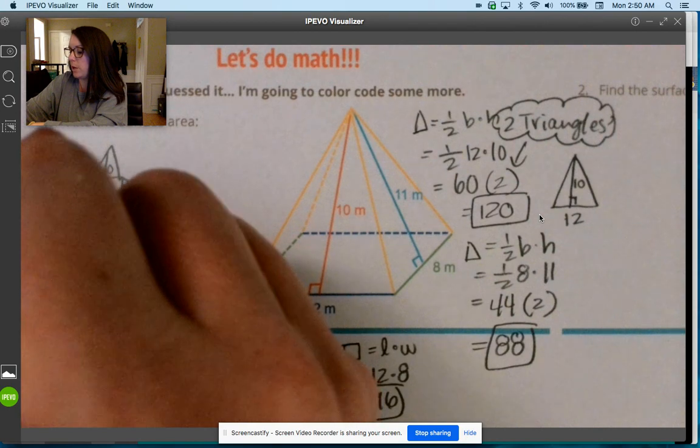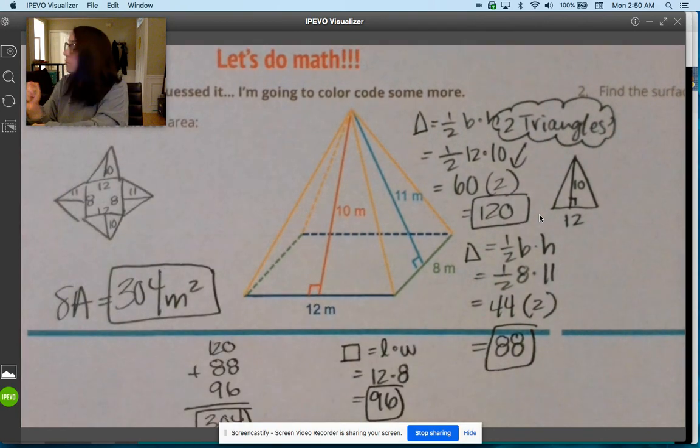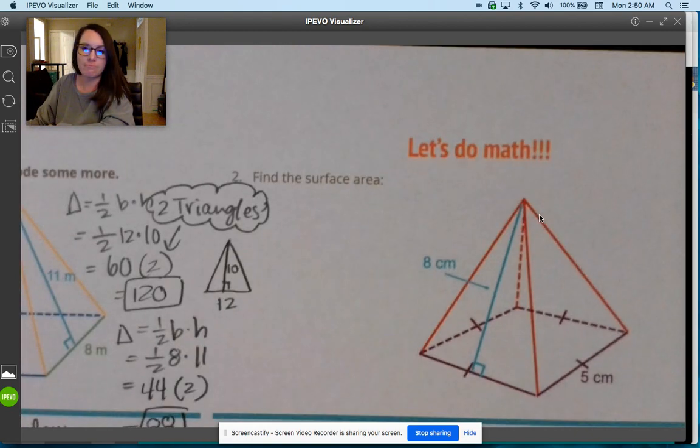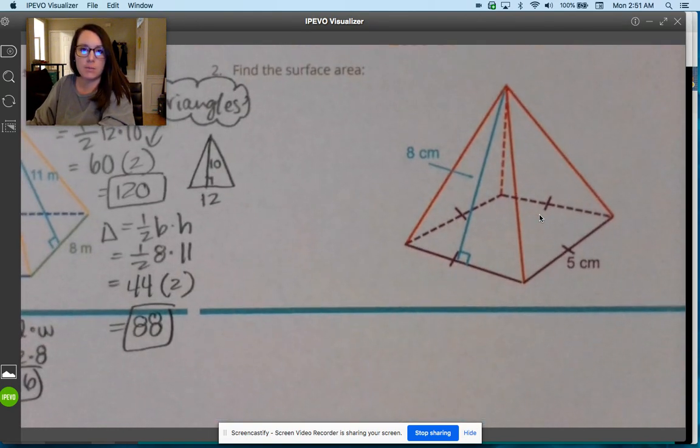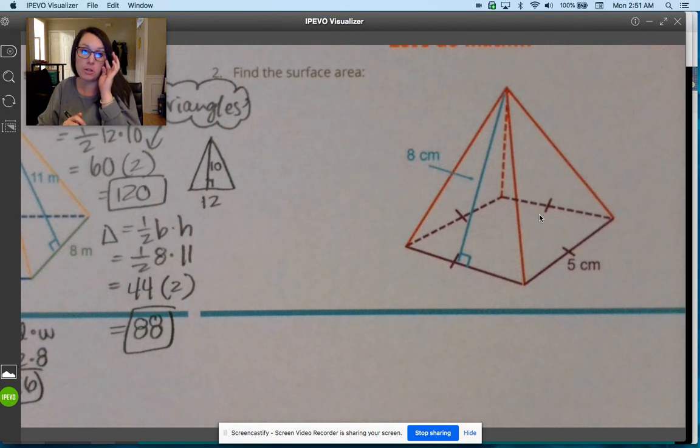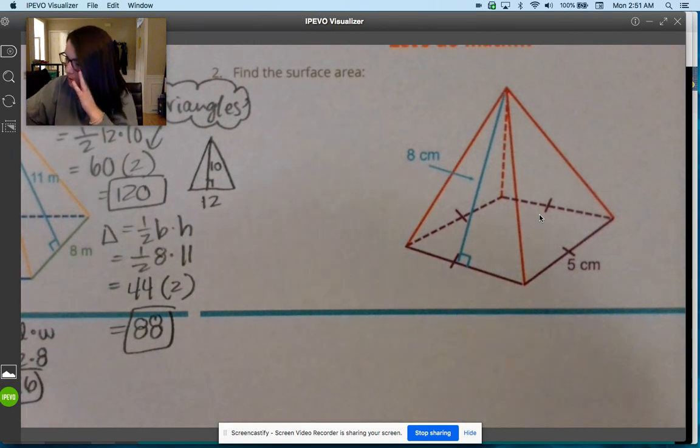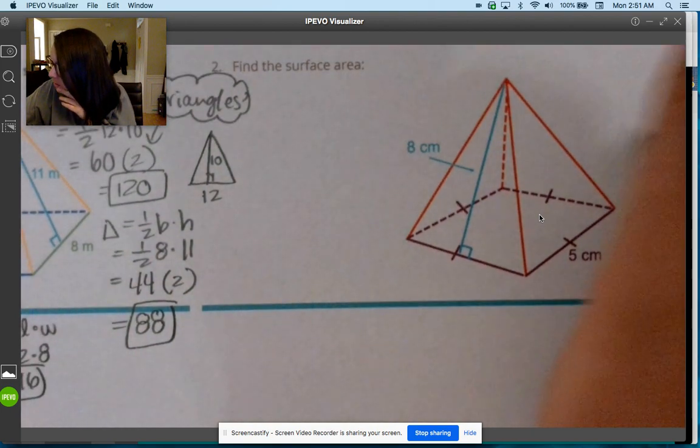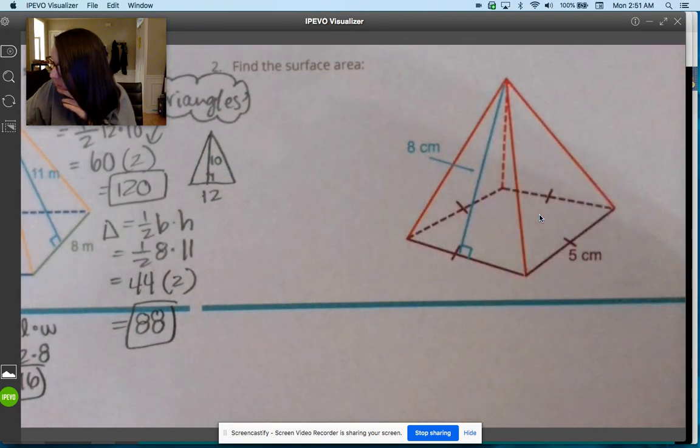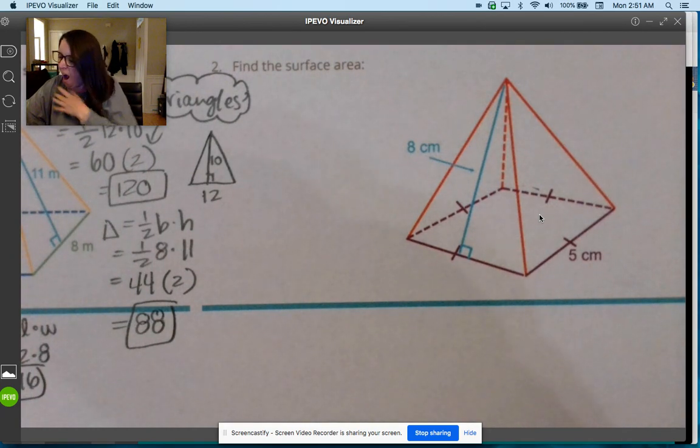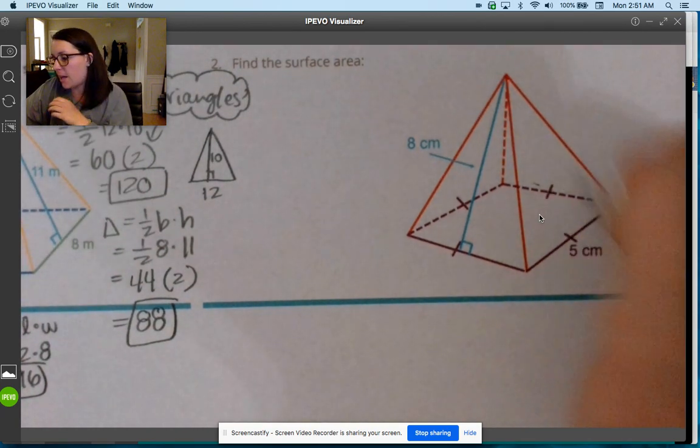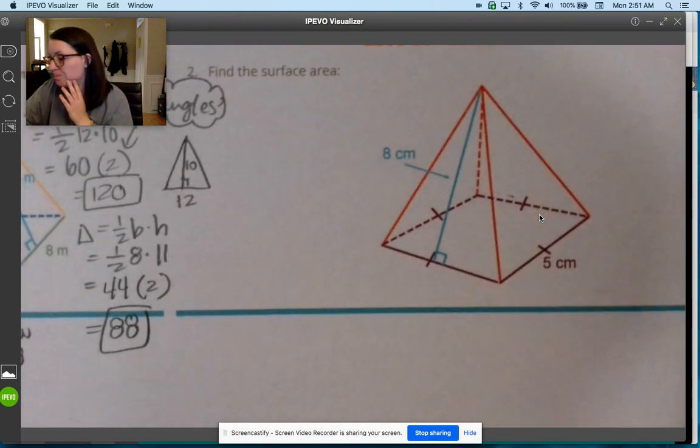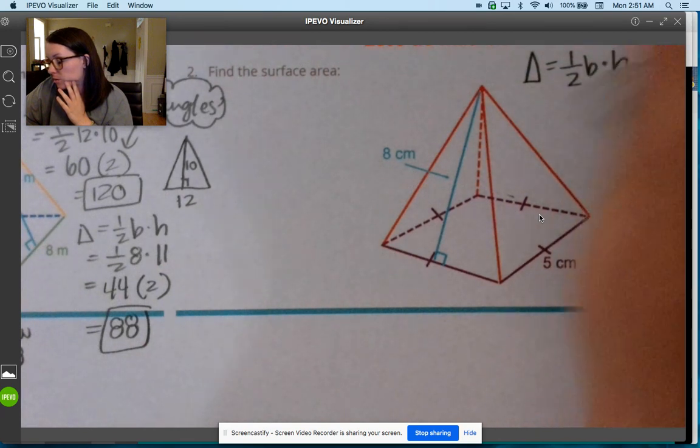Let's do number two. This one is a little different. I'll just show you the lines of congruence. This is just saying that this is actually a square down here at the bottom, so all of these sides are 5 and they're all the same colors. That means that all of the triangles are actually the same too, so all triangles are the same.